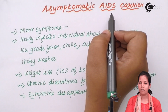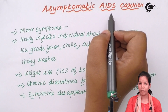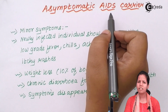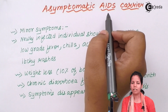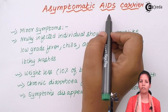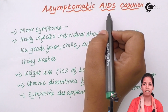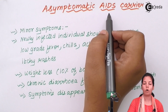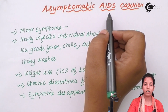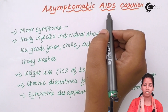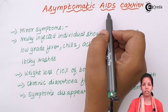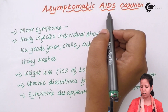An asymptomatic AIDS carrier means that the HIV virus is present inside the individual's body, but the symptoms are not so severe that they could be noticed immediately and effective cure can be given.